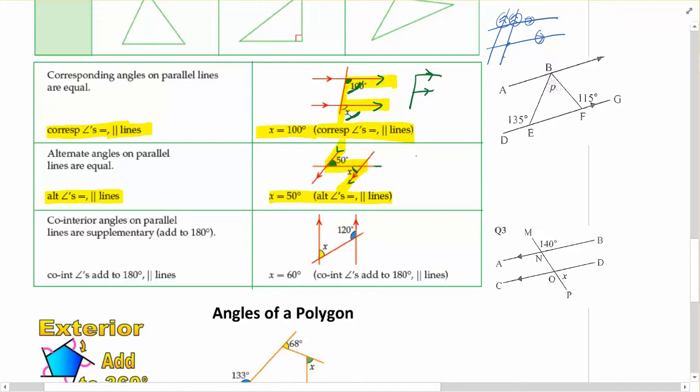And the shape that we often use for alternate angles is thinking about looking for z shapes where the parallel lines and then the two pieces that come together make that z. Versus the f shape. Where they're kind of both below the line, z is one's below, one's above. So they're alternate of each other.